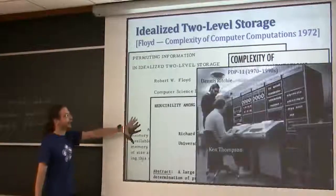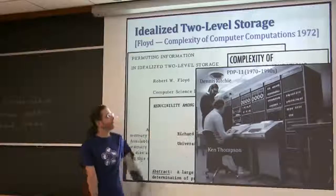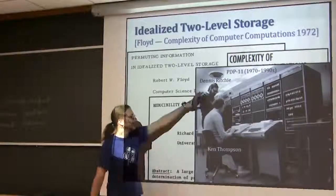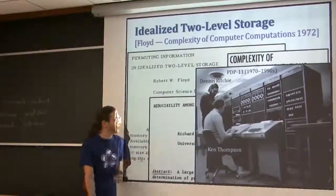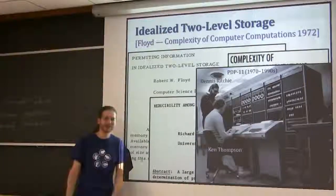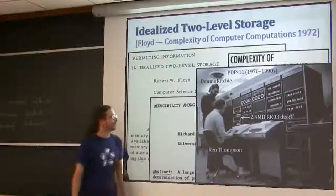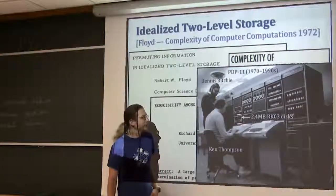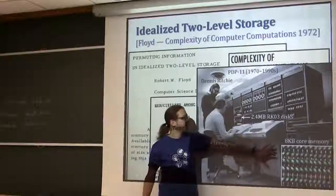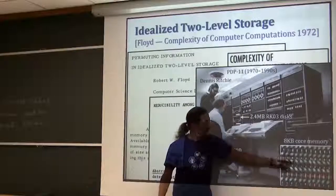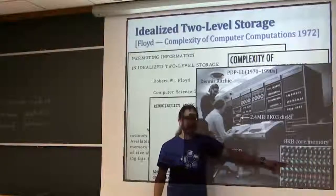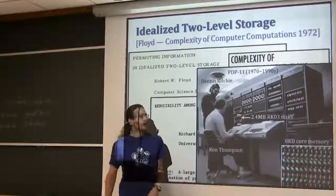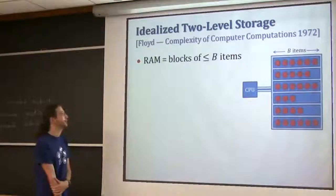This is in the day when one of the state-of-the-art computers was the PDP-11 - owned by Bell Labs, by Dennis Ritchie and Ken Thompson, the inventors of C and Unix. It has disks, each of which is about two megabytes in capacity, and it has internal memory which was core memory at the time - each a little circular magnetic core storing one bit, and in total there are eight kilobytes. So you get a sense of already this being an issue, and this is why they wrote their paper.